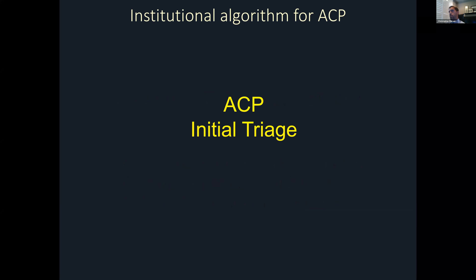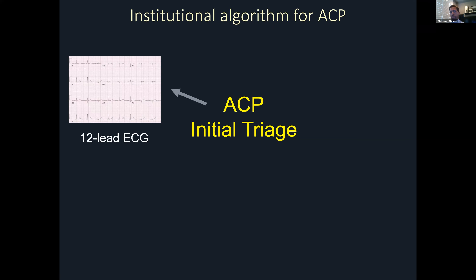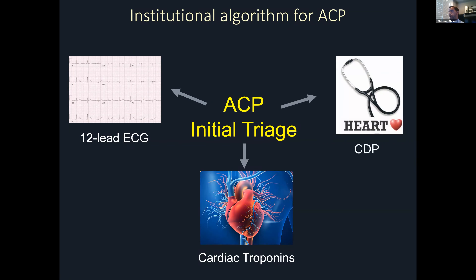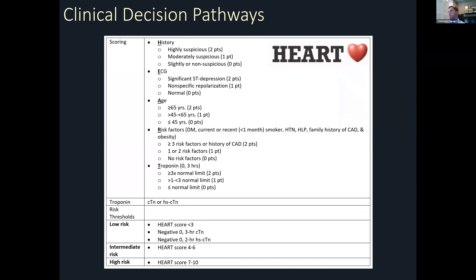The position of our writing group, as well as the ACC, is that appropriate selection for coronary CT in the ED is best guided by having a framework or institutional algorithm for acute chest pain. That algorithm always starts with initial triage, and the three most important elements are: a 12-lead ECG to catch patients with ischemic changes or STEMIs and route them quickly to the cath lab; cardiac troponins to identify myocardial necrosis and injury; and some sort of clinical decision pathway or risk stratification tool. The HEART score is one such tool used most commonly in the US, very helpful for stratifying patients into low, intermediate, and high risk groups.